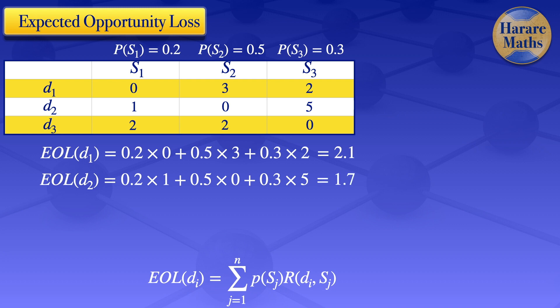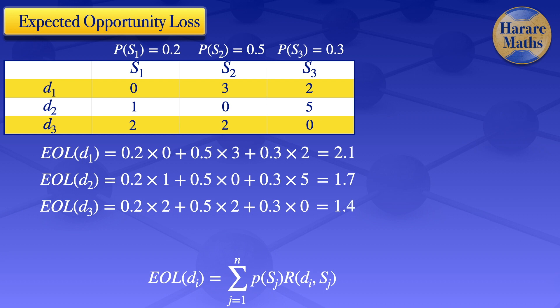For decision number 3, the expected opportunity loss is: probability 0.2 times the corresponding regret of 2, plus 0.5 times the corresponding regret of 2, plus 0.3 times the corresponding regret of 0. This gives us 1.4.